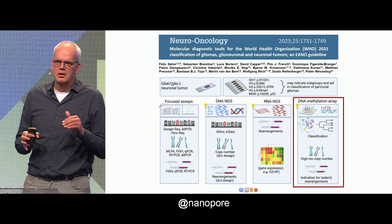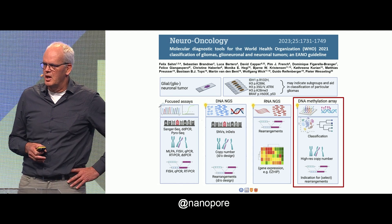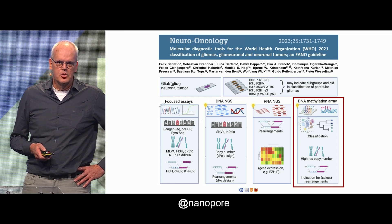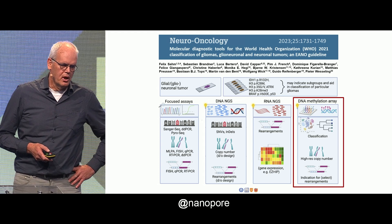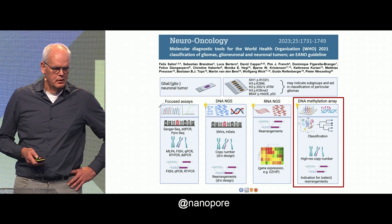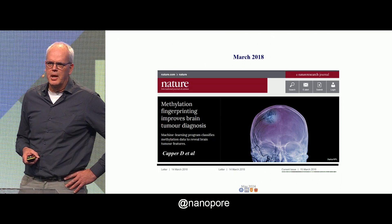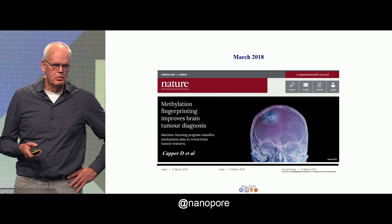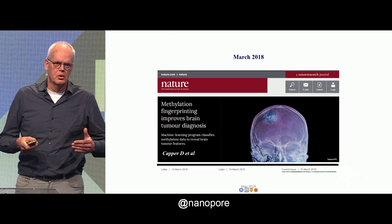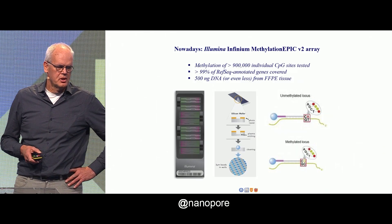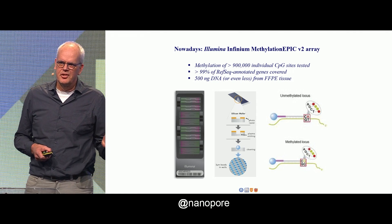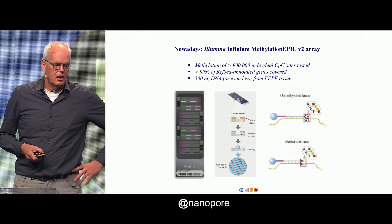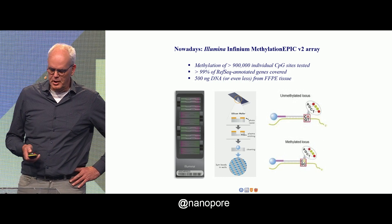Here is an overview of the armamentarium we have as neuropathologists for diagnosing CNS tumors, and a new star is methylation profiling, so far mainly applied using the Illumina platforms. In 2018, a paper was published in Nature on this platform, and it brought a kind of revolutionary change in how we deal with classification of CNS tumors. As you probably know, more than 450,000 at that time — and now more than 900,000 — probes are used to assign a particular methylation fingerprint to a tumor.